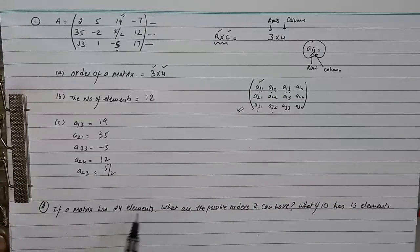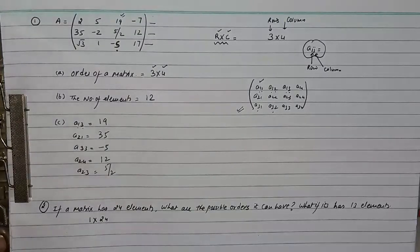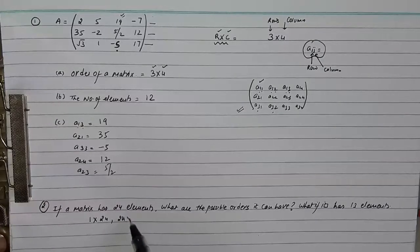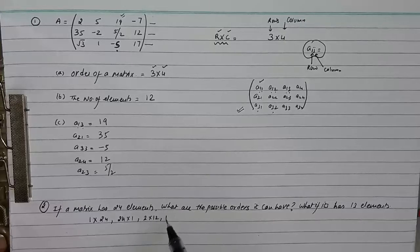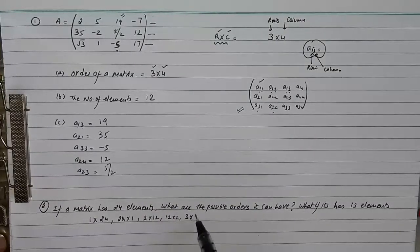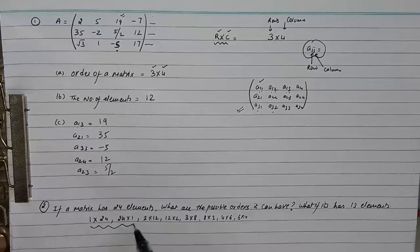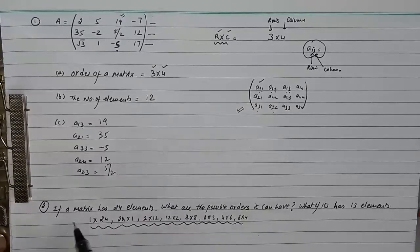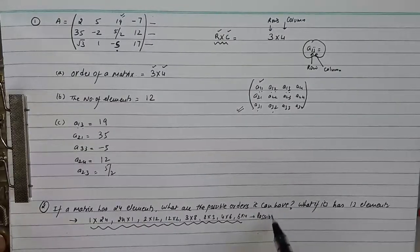In the second question, if a matrix has 24 elements, how can we arrange those 24 elements? We can arrange them as 1 into 24, or 24 into 1 column-wise, or 12 into 2, 2 into 12, 3 into 8, 8 into 3, 4 into 6, or 6 into 4. So these are the possible orders that matrix can have.